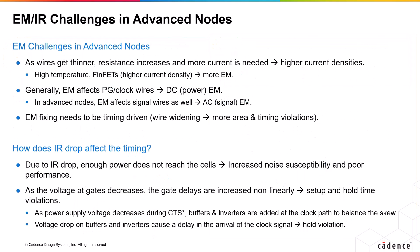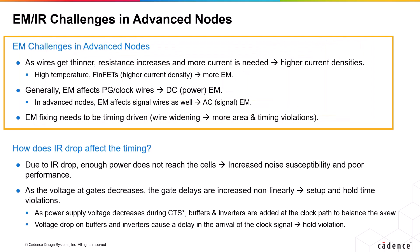EM IR challenges in the advanced nodes. What can go on when the metal atoms drift away from their intended positions? That is generally known as electromigration, or EM. One possible issue is that it could lead to open circuits due to voids in the wires or vias. Another possibility is that it could lead to short circuits due to extrusions, or what is generally known as hillocks, that happen on the wires due to EM.